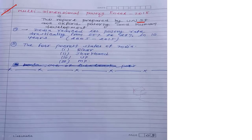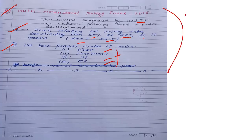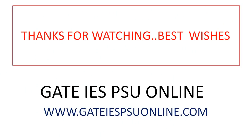Eighteenth current affair: Multidimensional Poverty Index (MPI) 2018, prepared by UNDP and Oxford Poverty and Human Development Initiative. India dramatically reduced its poverty rate from 55% to 28% in ten years (2005–2015). The four poorest states in India are Bihar, Jharkhand, Uttar Pradesh, and Madhya Pradesh.